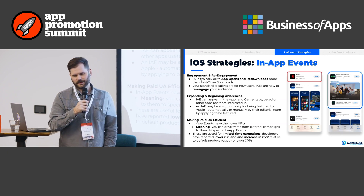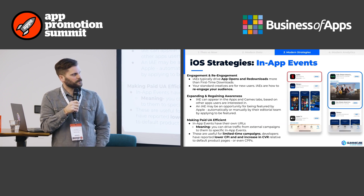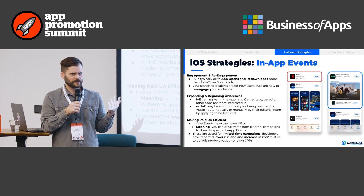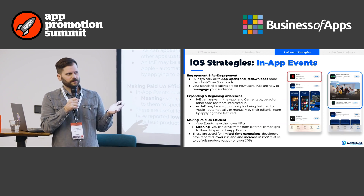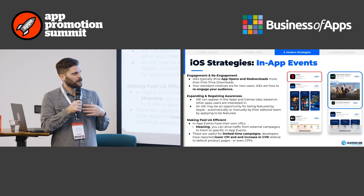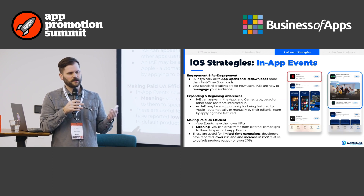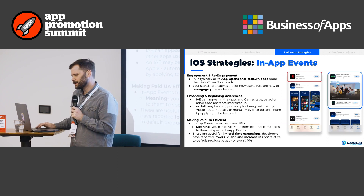It's also a way to make your paid UA efficient. Custom product pages are more commonly thought of for this — you can take a custom product page URL and put it on your paid campaign, drive users to it. But you can do this with in-app events too. They make unique URLs automatically, and you can drive users based on email lists or social campaigns directly to an in-app event for seasonal content. We've seen lower CPI and higher CVR on those. So think about in-app events not just for their search presence but also their browse presence and their effect on paid.